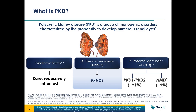All right, so without further ado, I'll turn the floor over to Dr. Lipschutz. Hi, everyone. I look forward to talking with you for the next 45 minutes about ARPKD. So first we'll start — what is PKD in general? Polycystic kidney disease is a group of monogenic disorders characterized, kind of obviously by the name, by the propensity to develop numerous renal cysts. You can basically divide it into three categories.